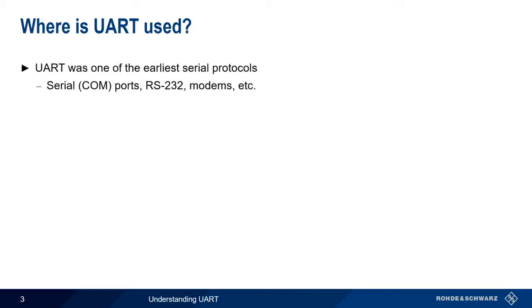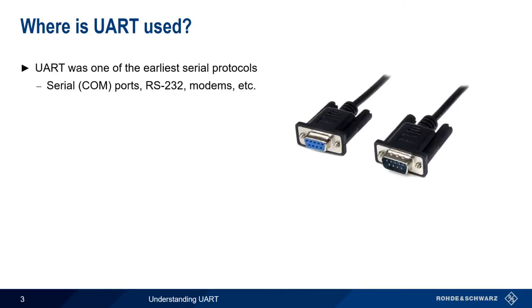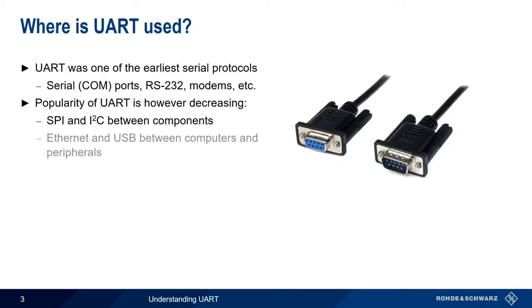UART was one of the earliest serial protocols. The once ubiquitous serial ports are almost always UART-based, and devices using RS-232 interfaces, external modems, etc. are common examples of where UART is used. In recent years, the popularity of UART has decreased somewhat. Protocols like SPI and I2C have been replacing UART between chips and components. And instead of communicating over a serial port, most modern computers and peripherals use technologies like Ethernet and USB.